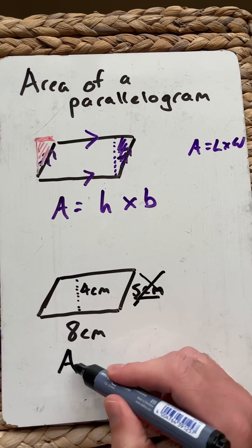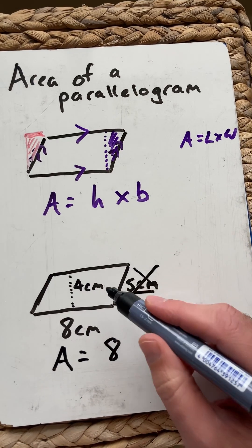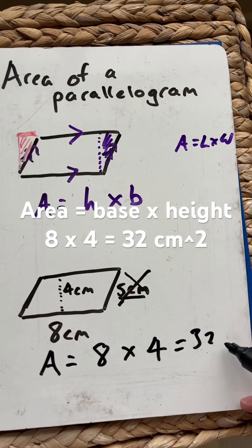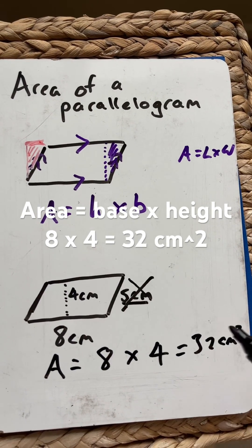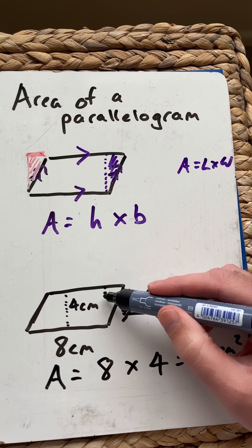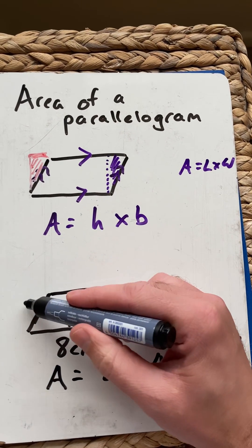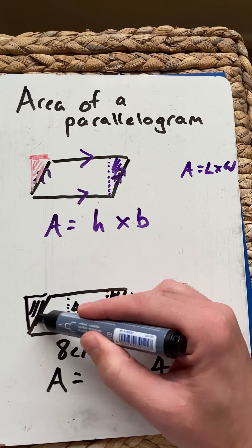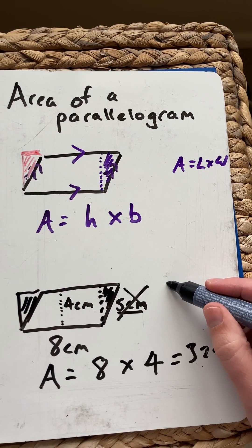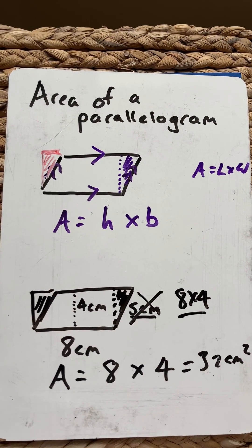So all we need to do is substitute in the base of 8 cm and the perpendicular height of 4, and we get 32 cm². What you're trying to do is approximate to a rectangle by cutting that bit off and adding it there. Then we have a rectangle of 8 by 4. That's Martin Maths' parallelogram. Thanks for watching.